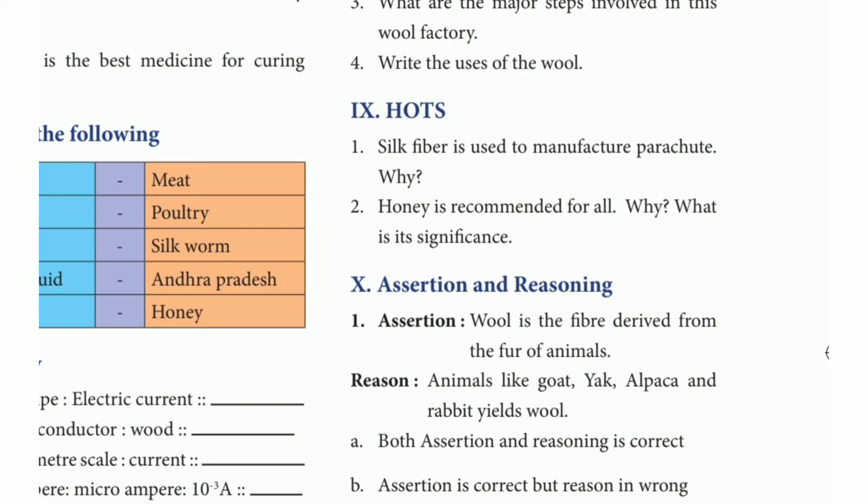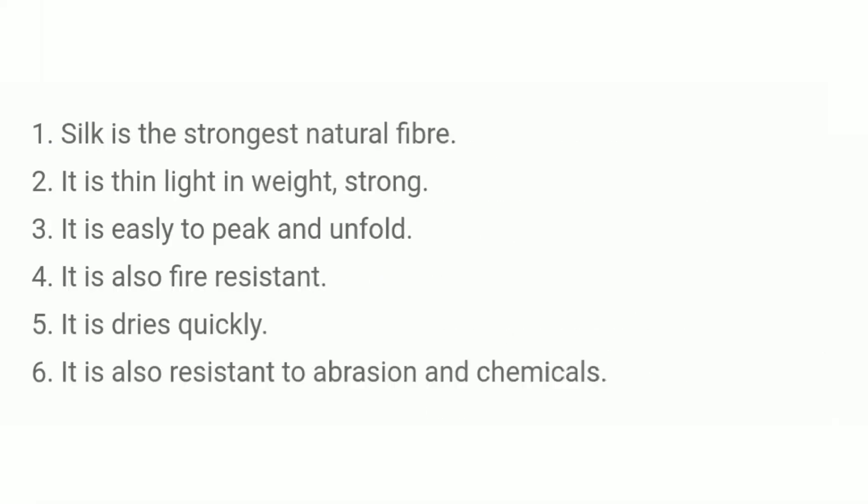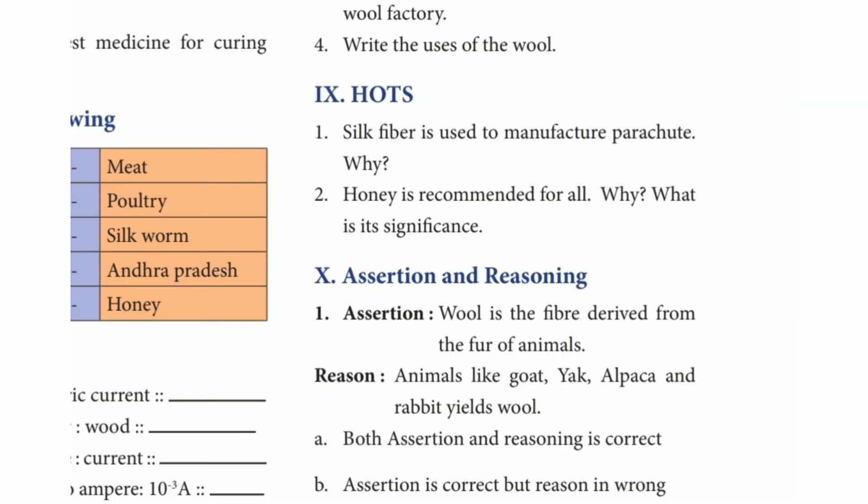Higher order thinking. First question: silk fiber is used to manufacture parachutes — why? Silk is the strongest natural fiber. It is thin and light in weight yet strong. It is easy to pack and unfold. It is also fire resistant, dries quickly, and is resistant to moisture absorption and chemicals.